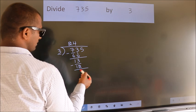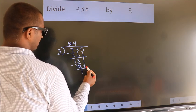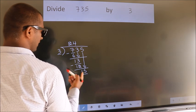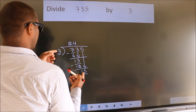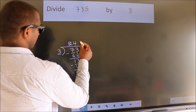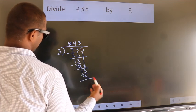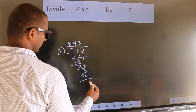After this, bring down the beside number. So, 5 down. So, 15. When do we get 15? In 3 table. 3 5s, 15. Now we subtract. We get 0.